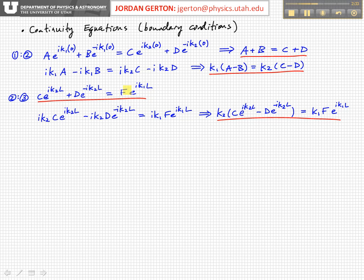There's nothing more that we can simplify this at the moment, and then the continuity of the derivative at the boundary between region 2 and 3 gives you this, and this basically simplifies to K2 times the quantity C e to the i K2 L minus D e to the minus i K2 L, and that's got to equal K1 times F times e to the i K1 L. So those are our four continuity relationships.